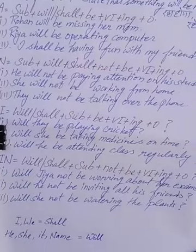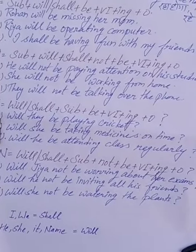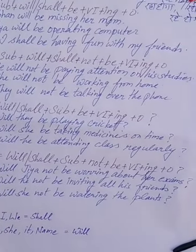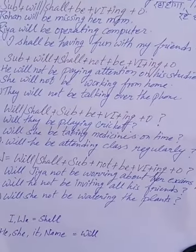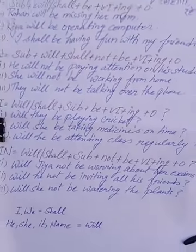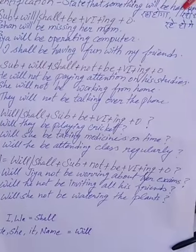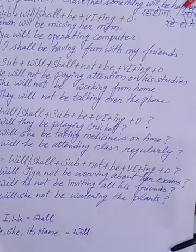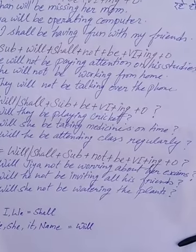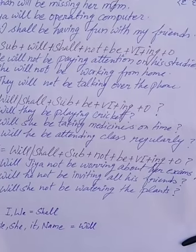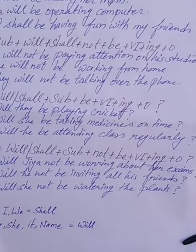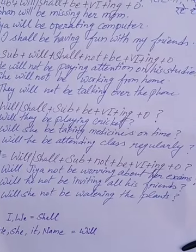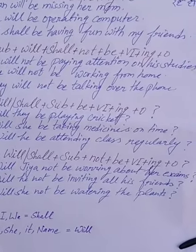For interrogative negative sentences, you use will or shall first, then subject, then not, then be, then present participle, then object, then a question mark. For example: Will she not be worrying about her exams? Will he not be inviting all his friends? Will she not be watering the plants? These are very easy to understand and make.